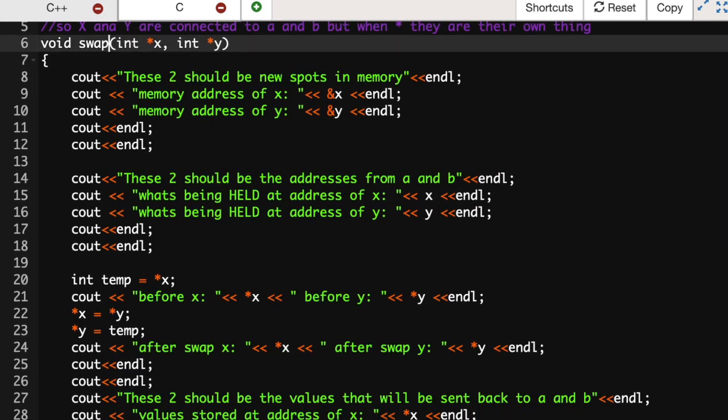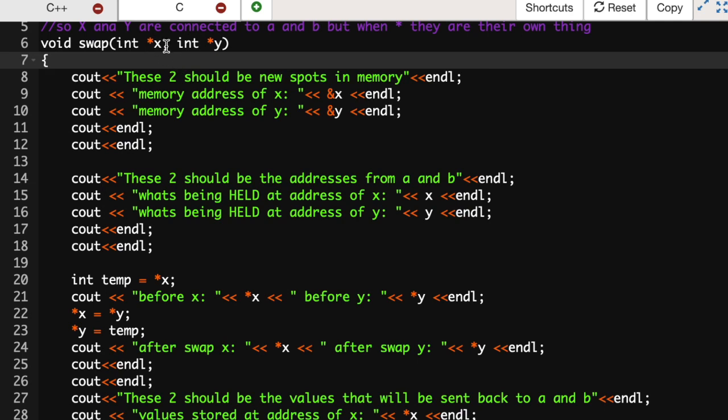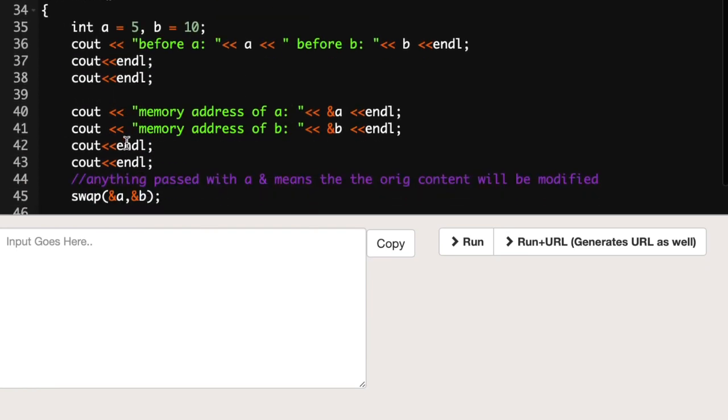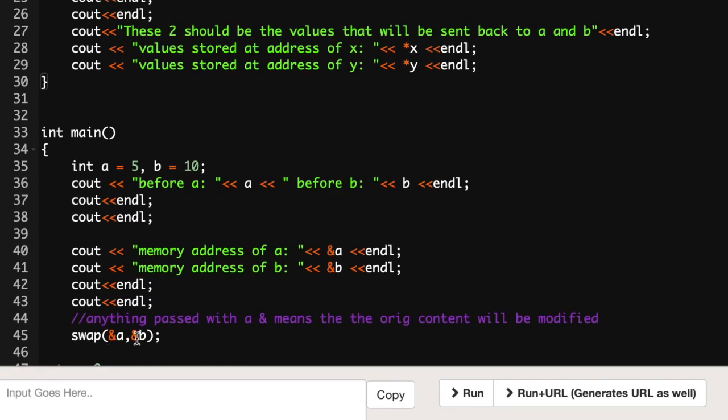Here we have int x and y being created and those are two pointers. We have x is pointing to an integer, same thing with y, and those are going to be corresponding with a and b which we have passed in right here, same order, that's how they are connected.